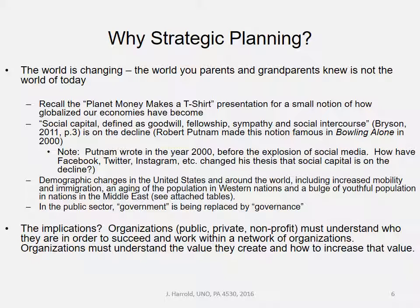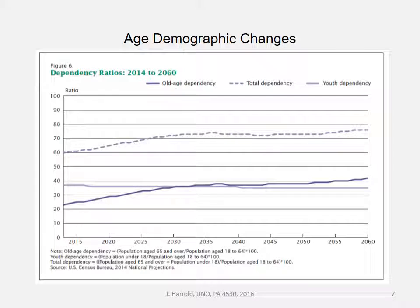So what are the implications of all this globalization that we can observe? Organizations must understand who they are in this globalized environment in order to succeed and work within a network of organizations. They must understand the value they create and how to increase that value. Here's a chart — it's a little hard to read — but this happens to be the United States. That dotted line is total dependency, the lighter line is youth dependency, and the dark blue line is old age dependency.